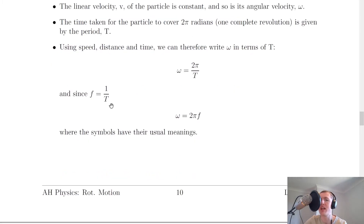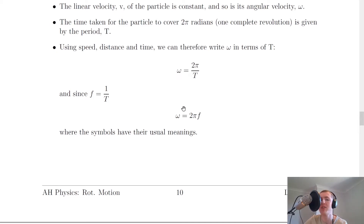From national five and higher physics, frequency is equal to one over the period. We can rearrange for T and substitute into the omega equation to get it in terms of frequency, arriving at omega equals two pi times f. So if you're trying to find the angular velocity, you can use two pi over T, or two pi times f, depending on whether you know the period or the frequency.